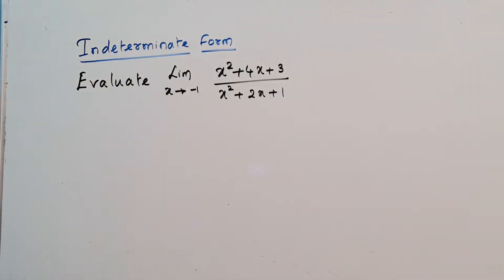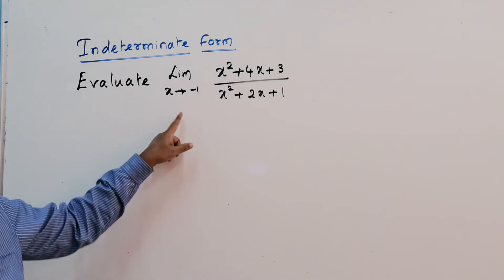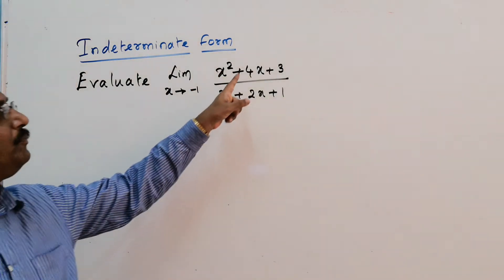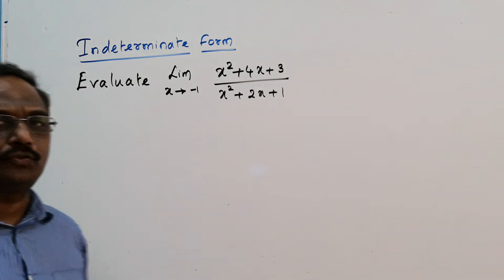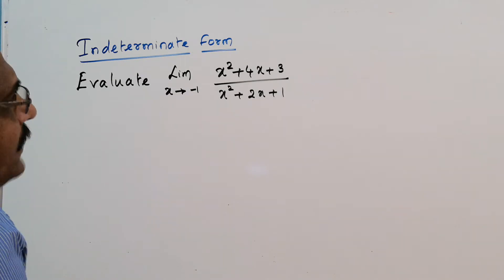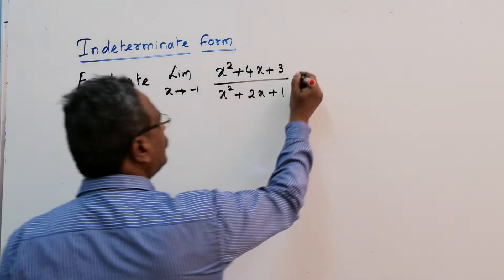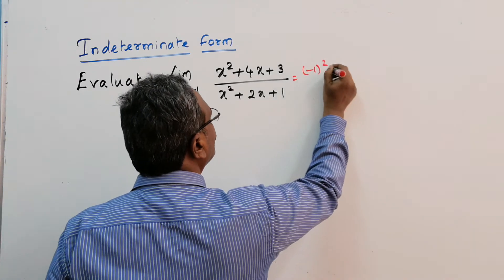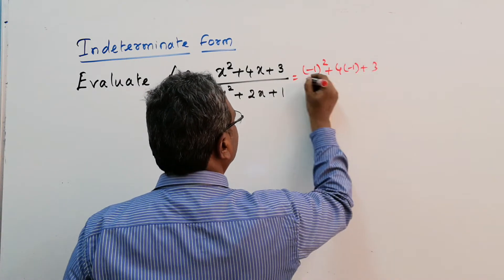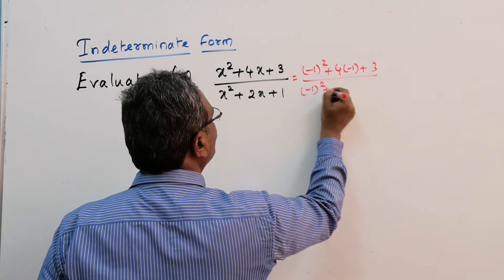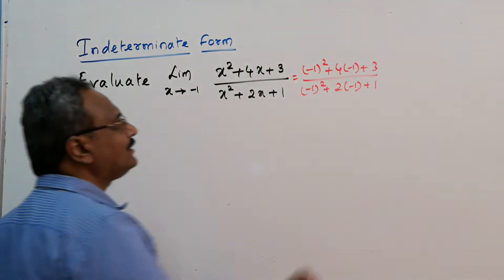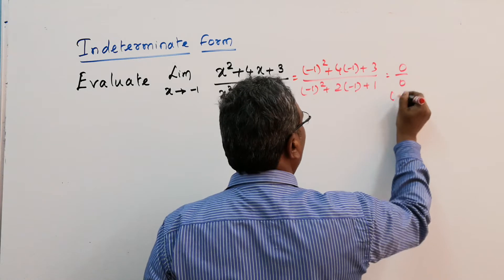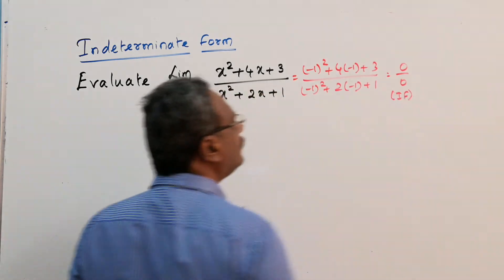Let me discuss one more problem. Evaluate the limit x tends to minus 1 of (x squared plus 4x plus 3) divided by (x squared plus 2x plus 1). Substituting x equals minus 1 gives minus 1 squared plus 4 times minus 1 plus 3 over minus 1 squared plus 2 times minus 1, which again gives 0 by 0 — indeterminate form.